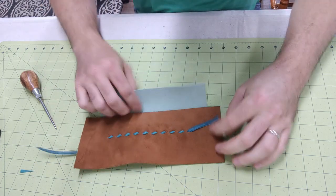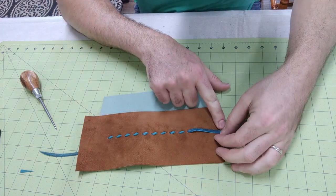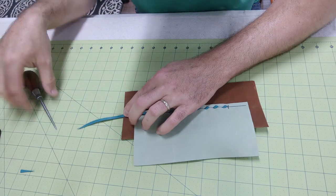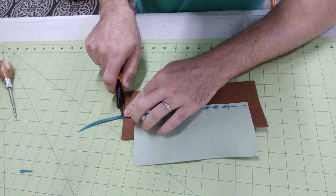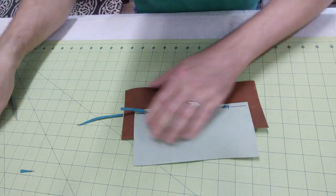Once you've finished lacing through all the holes you'll see that I have lace starting at one end of the leather and I'm going to cut the other end of the lace at the other edge of the two leather pieces.